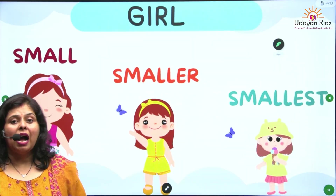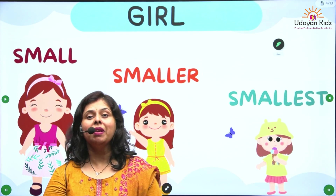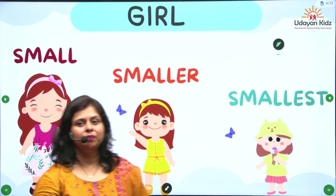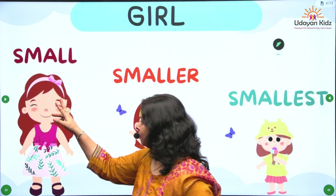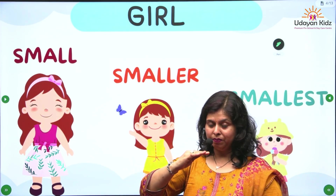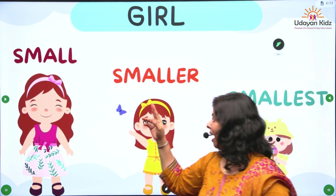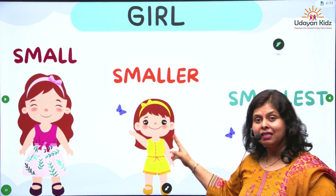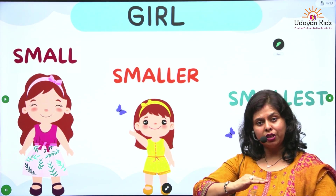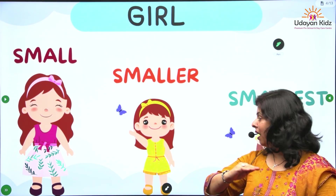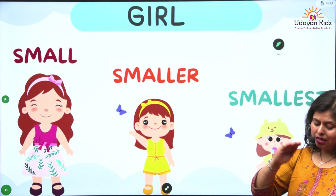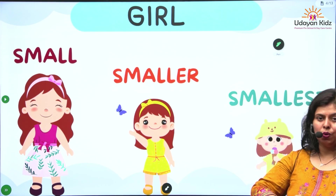I will show you some examples. Small — the girl is small. And next, the girl is smaller. And the third one is smallest.